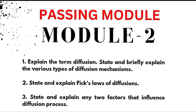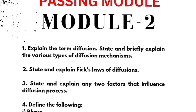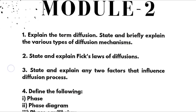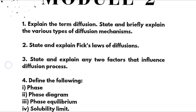First, we have Module 2, which I consider a passing module, because a lot of times the exam has repeated these important questions for Module 2 and you can easily grab more than 15 to 16 marks in this particular module. First question: explain the term diffusion state and briefly explain the various types of diffusion mechanisms.